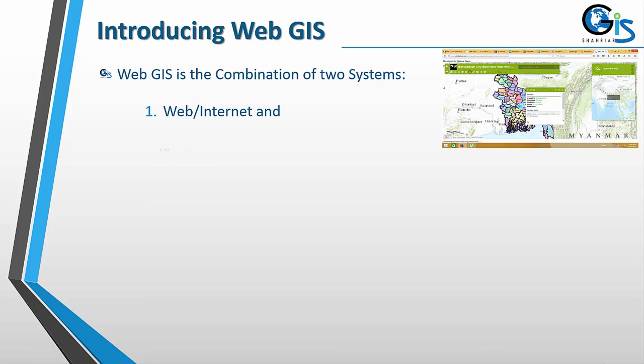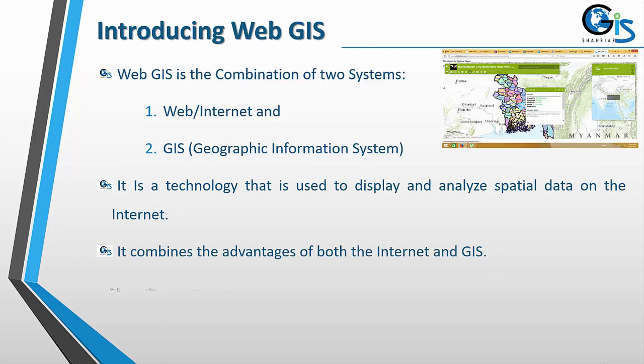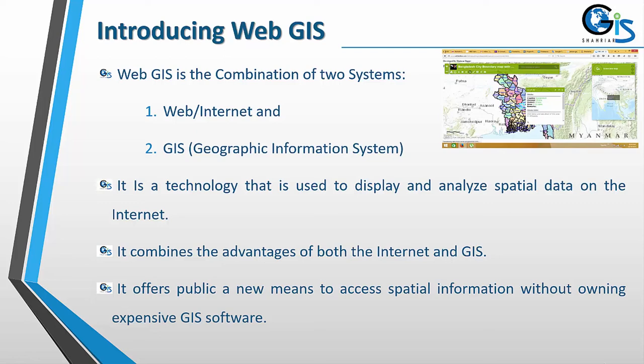Introducing Web GIS. Web GIS is the combination of two systems: the web or internet, and GIS which means Geographic Information System. It is a technology used to display and analyze spatial data on the internet. It combines the advantages of both the internet and GIS.